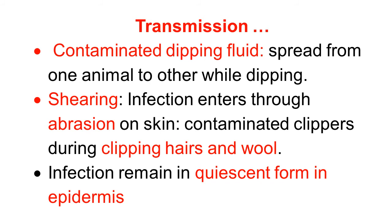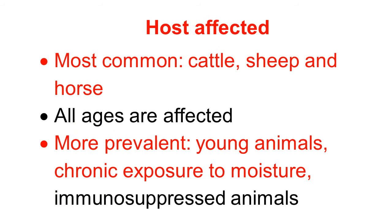It is also observed that infection can remain in a quiescent form in the epidermis. But when predisposing factors such as vectors, heavy rainfall, or constant wetting occur, the organism starts multiplying and disease develops. So it requires a predisposing factor for establishment of the infection.